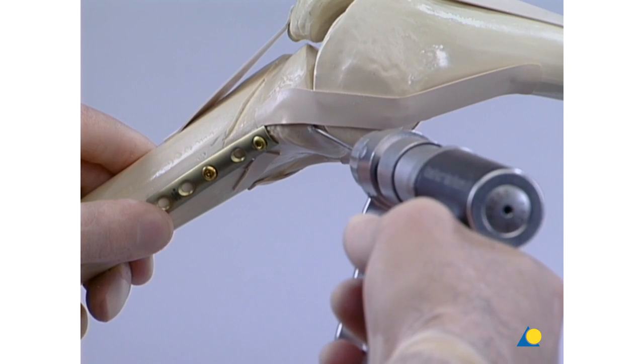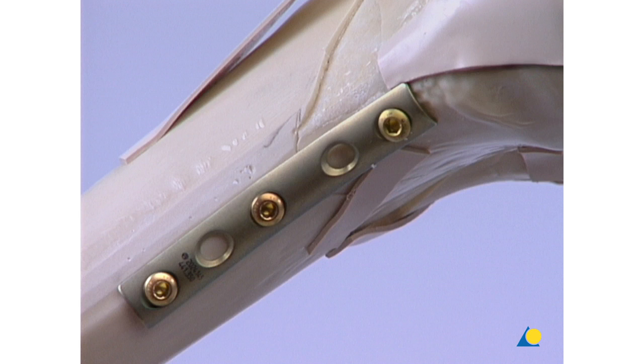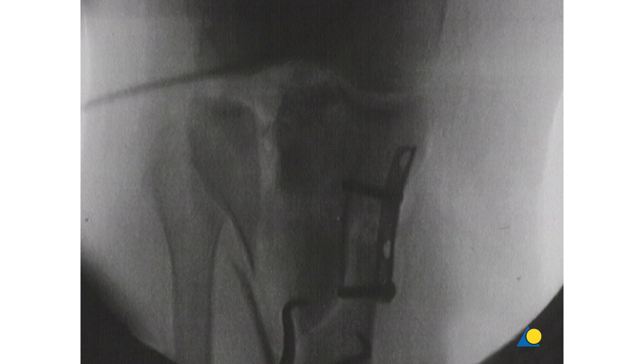The K-wire must now be removed. The third cortex screw is inserted through the most distal plate hole. At this point, an intraoperative x-ray is advisable, as in this clinical example.